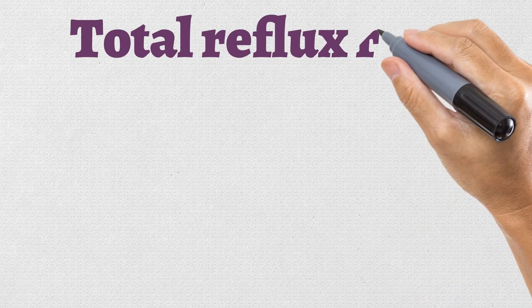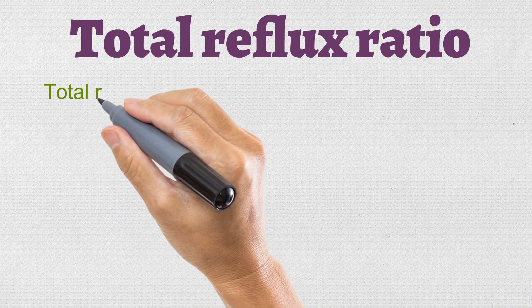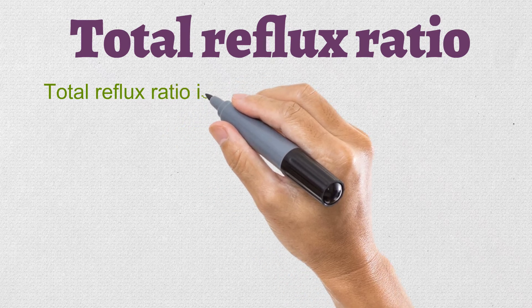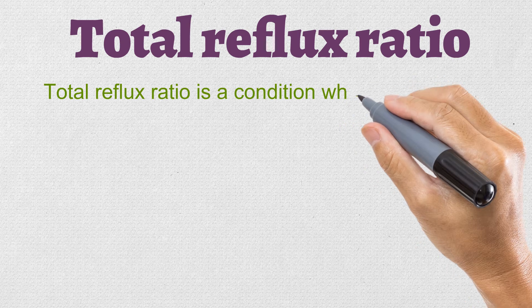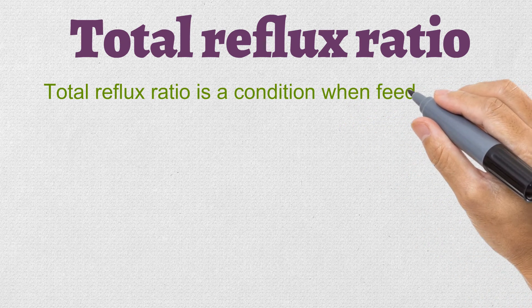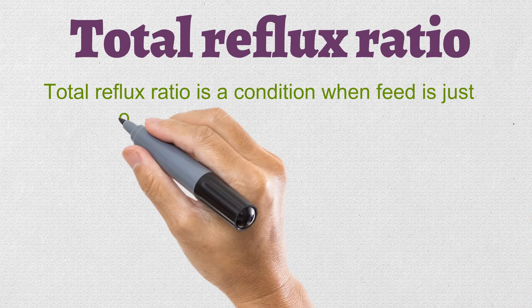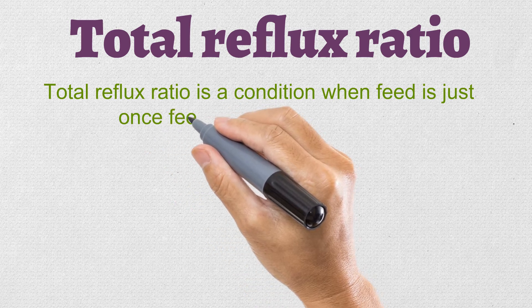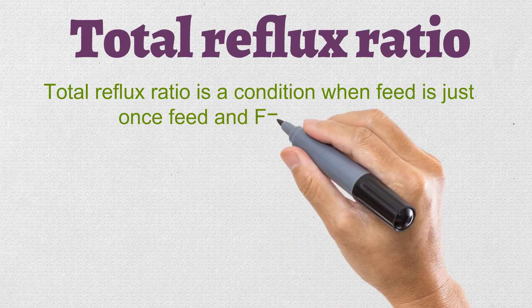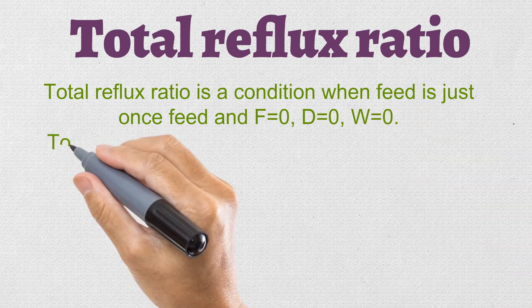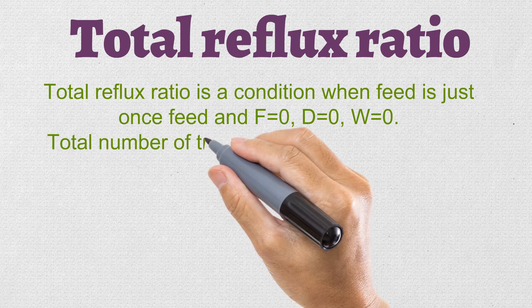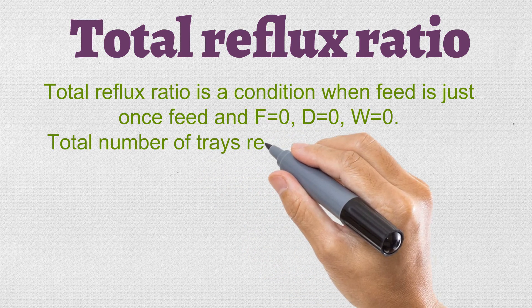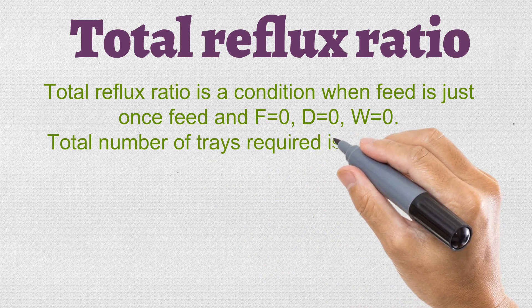The first type is total reflux ratio. Total reflux ratio is a condition where feed is given just once into the distillation column and we do not take out any distillate or any residue. No feed is continuously given, no distillate is taken out, and no residue is collected — the feed remains in the system and rotates with total reflux.